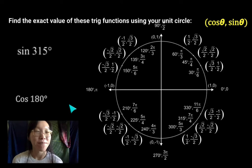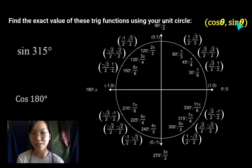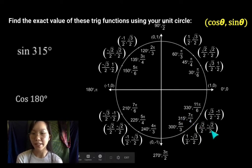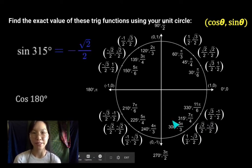Did you find it? Let's find sine of 315 first. So remember, sine is the second coordinate value. So when you find the angle of 315, which is right here, the second coordinate is negative square root 2 over 2. So that's going to be the value of sine 315.